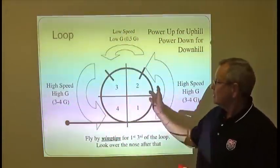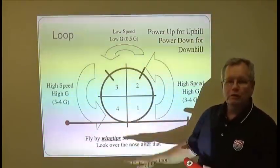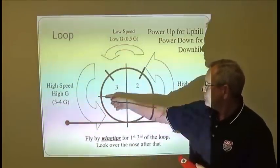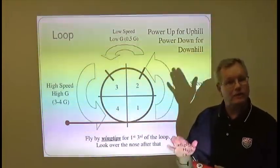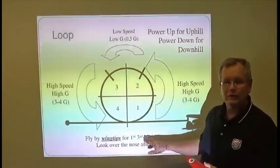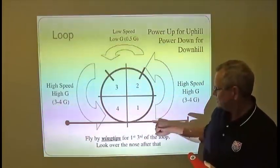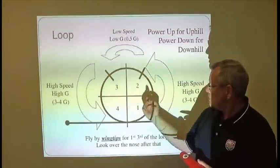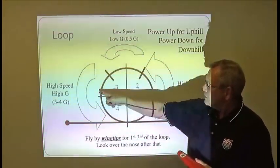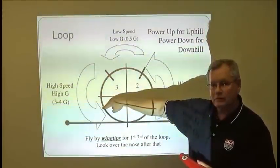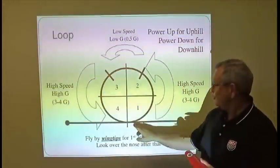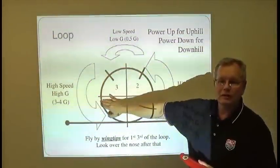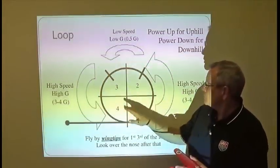Now, aerobatic judging standard. People will tend to finish the loop high, and what that means is that whatever their entry altitude was, they will finish above that, and that is a downgrade. You don't want to finish low either, but the point is you want to finish exactly, just like this is drawn, you want to finish exactly as you started. As you come over the top, what you're going to find is that you're just a little bit slower here than you were when you were here. So if you pulled, say, three and a half Gs here, you might want to pull just a little bit less there or else you'll tend to finish high.